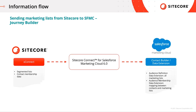For sending marketing lists from Sitecore to Salesforce Marketing Cloud into Journey Builder, the connector takes segmented lists and contact membership data from XConnect in Sitecore XP and pushes them into the audience definition data extension under all marketing lists, and the audience membership data extension where it creates the mapping between contacts and marketing lists. Similarly, in Email Studio, XConnect marketing lists and contact membership data is sent to the custom audience definition data extension and the audience membership data extension where marketing lists are created and mapped between contacts and marketing lists.